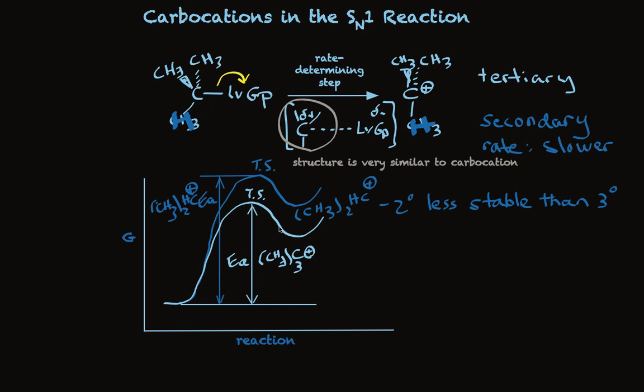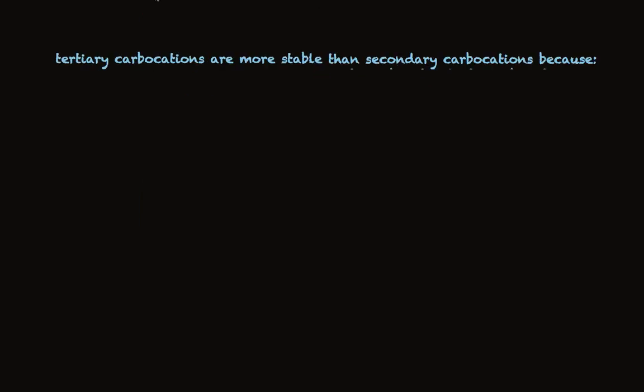The transition state leading to the more stable tertiary carbocation is more stable, for the same reason that the carbocation itself is more stable. And why is that? Well, tertiary carbocations are more stable than secondary carbocations, because alkyl groups attached to a carbocation donate electron density. And so a tertiary carbocation is more stable than a secondary carbocation is more stable than a primary carbocation. And that accounts for the relative rates.